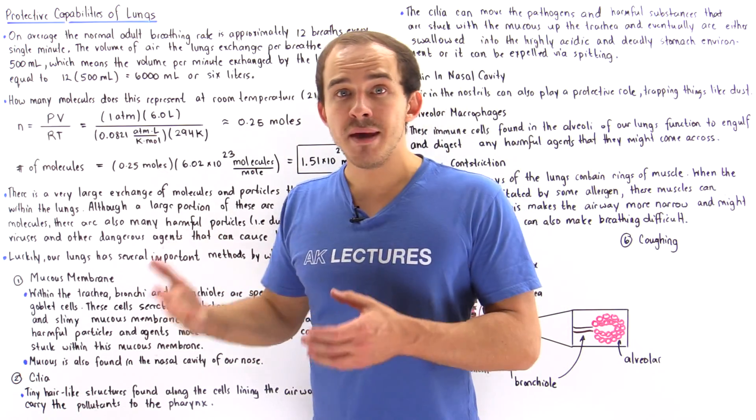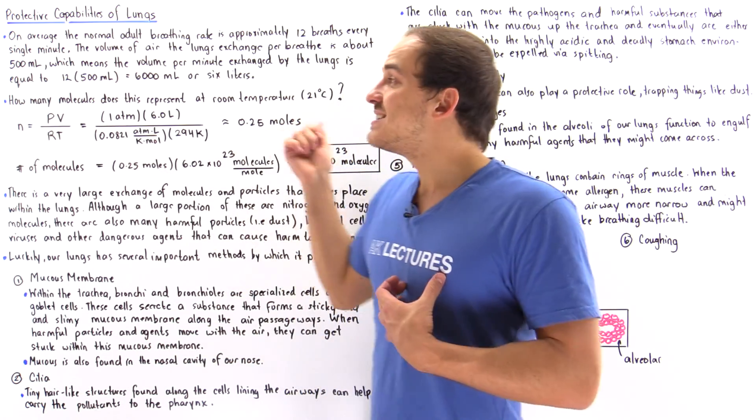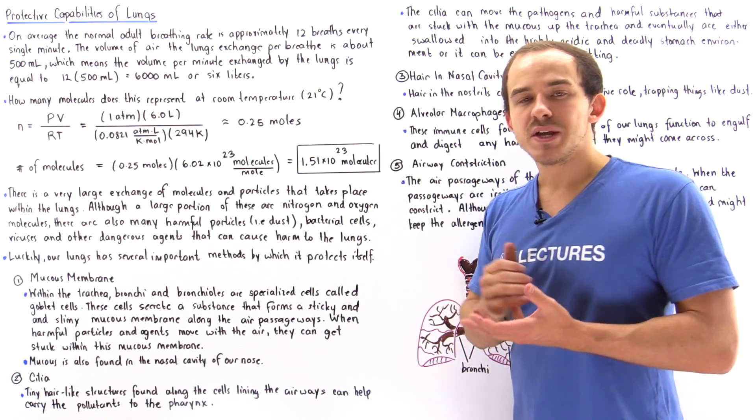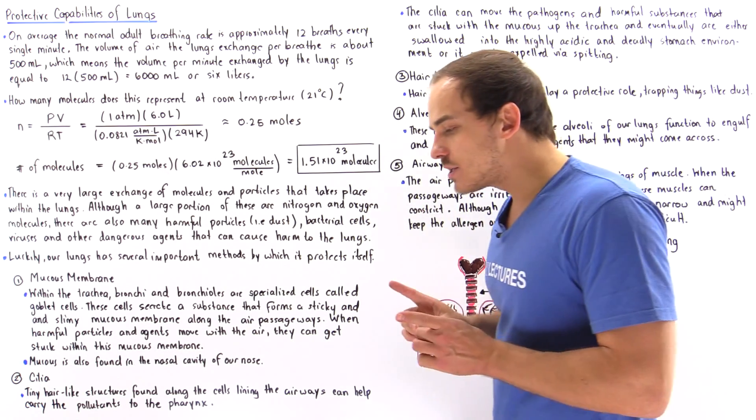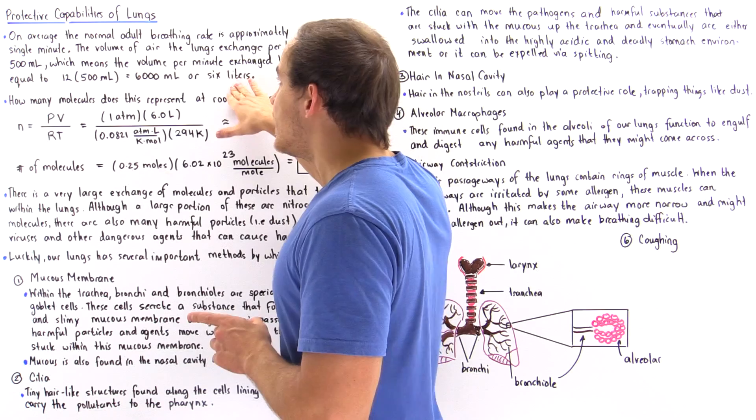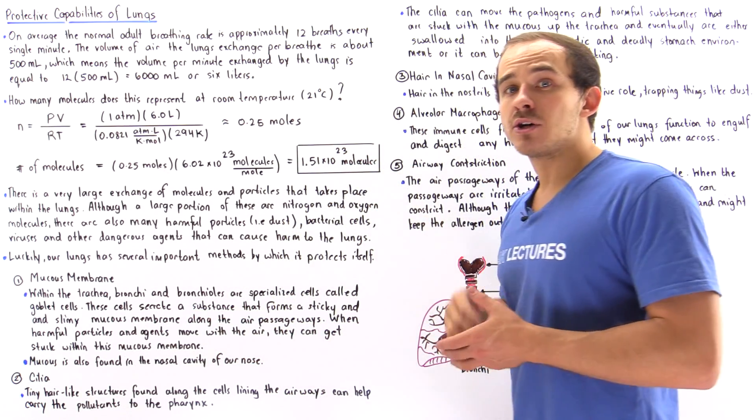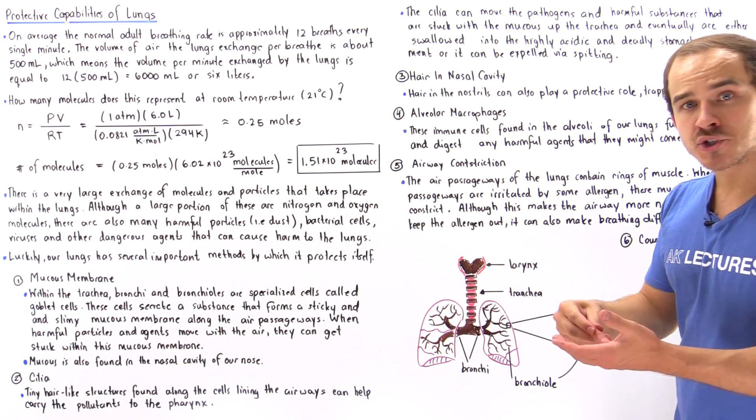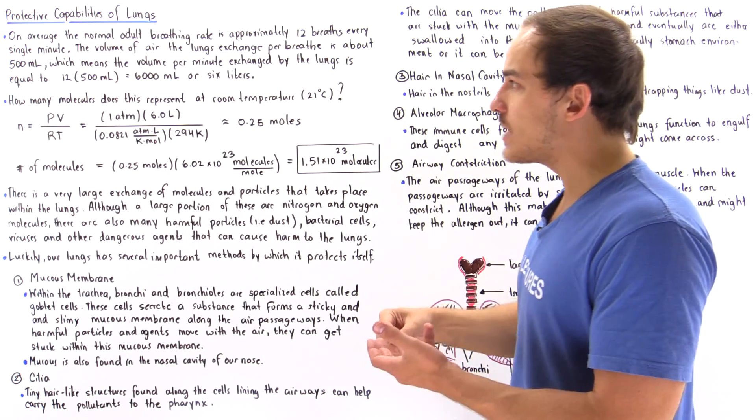So if we wait a minute, our lungs exchange six liters of air. The question is: how many molecules are found within six liters of air, assuming we're at room temperature and at atmospheric pressure?